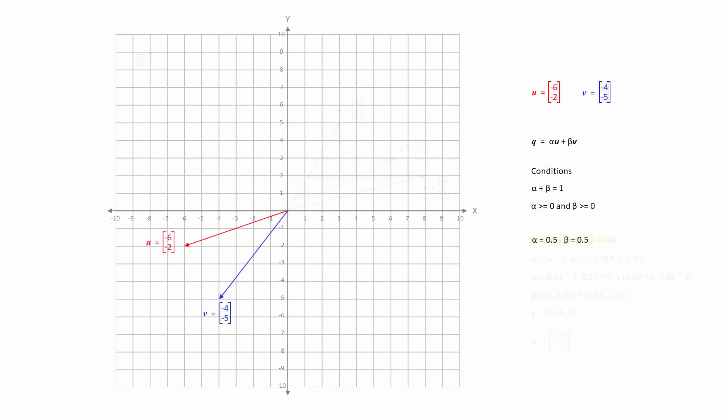And let's take a quick look at a convex combination with two different starting vectors. This time u and v both have negative coordinates. The coefficients are again 0.5 and 0.5. As before, the tip of the new vector lies on the line segment connecting the tips of u and v.